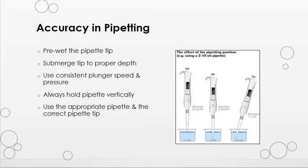It is important to pipette correctly to maintain accuracy. Some pointers to improve pipetting technique include pre-wetting the pipette tip, making sure the tip is submerged to the proper depth in the liquid, using consistent plunger pressure and speed, and always holding the pipette vertically. It is also crucial to use the appropriate pipette and correct pipette tip. In the image here, you can see how accuracy is affected just by the position of the pipette.